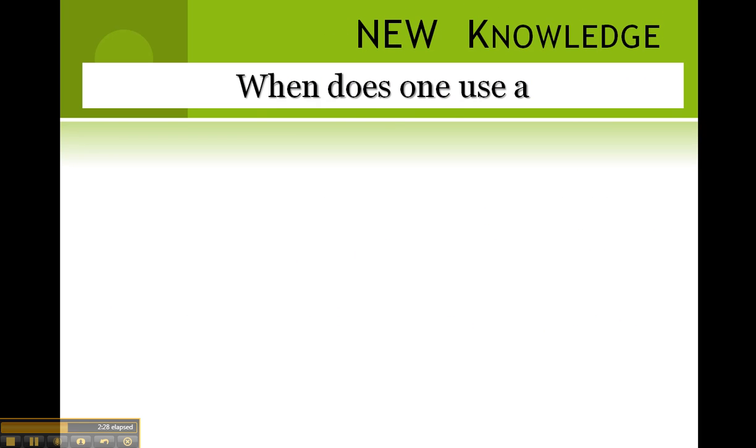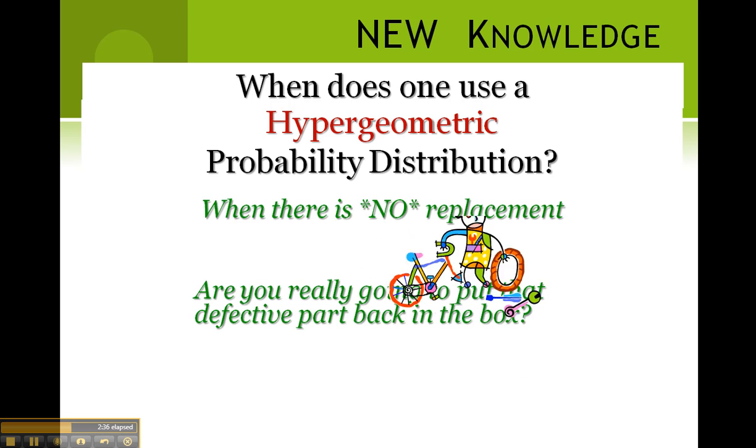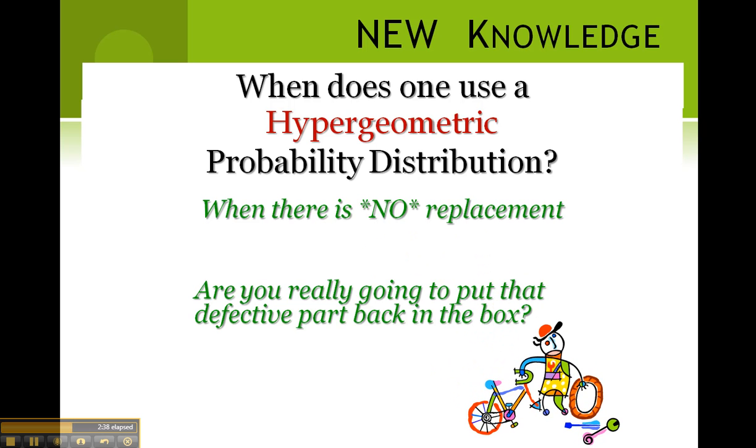When does one use a hypergeometric probability distribution? When there is no replacement. After all, are you really going to put that defective part back in the box?